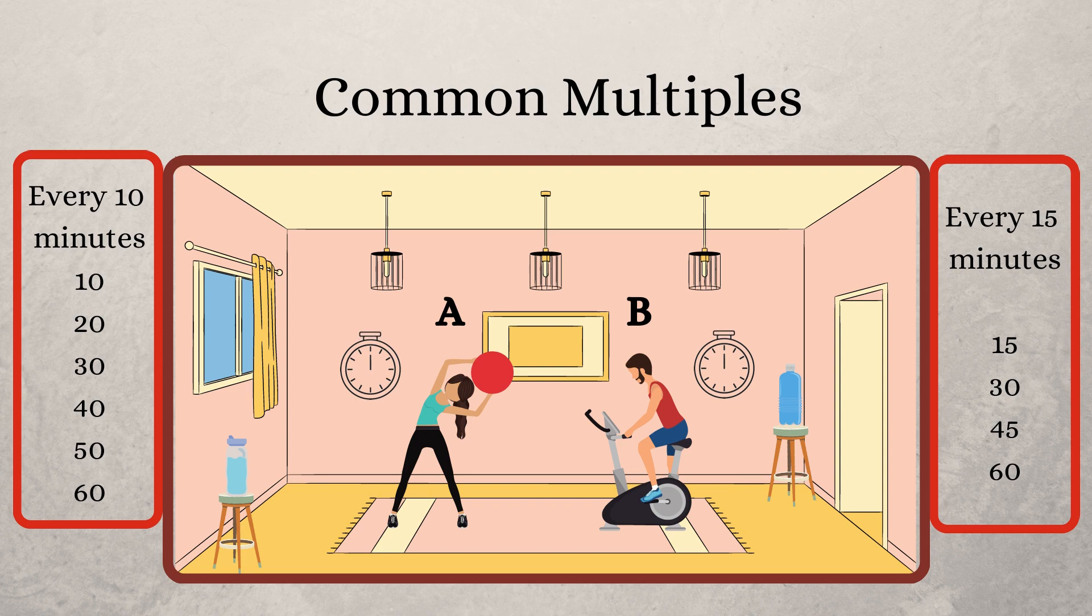To find the common multiples, let's find out when they drink water together. Can we say that this happens at 30 and 60 minutes? Yes. So 30 and 60 becomes the common multiples of 10 and 15.